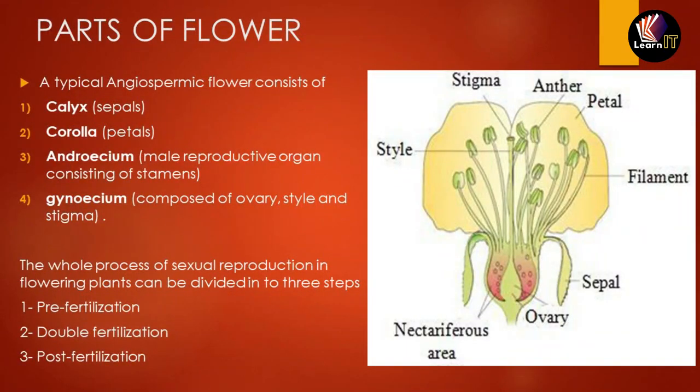Before moving on, let us discuss the different parts of the flower. An angiospermic flower — a plant that bears flowers — has four basic parts: first is the calyx, also known as sepals; second is the corolla, known as petals; third is the androecium, the male reproductive organ consisting of stamens; and the last is the gynoecium, which is composed of ovary, style, and stigma.